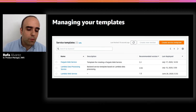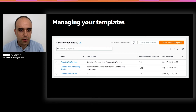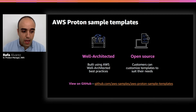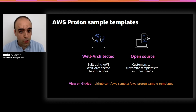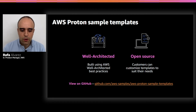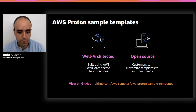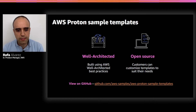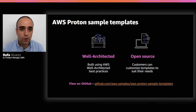We want to support AWS Proton customers with some sample templates that can be used to learn and start practicing. They are well-architected, built based on our best understanding of how to use this service, and they are open source — anybody can download them, run them as-is, change them, or use them to learn how to build their own templates. They are available on GitHub in the repo shown on screen, and we plan to continuously add new ideas to support customers learning what to do with Proton.